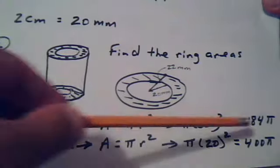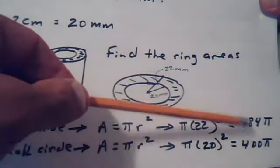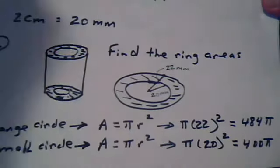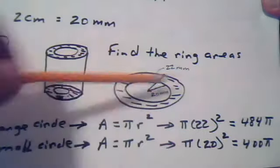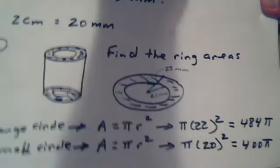After simplifying, these are their respective areas. One for the big circle, and one for the smaller circle. Now subtract the smaller from the big, and that will leave you the ring area.